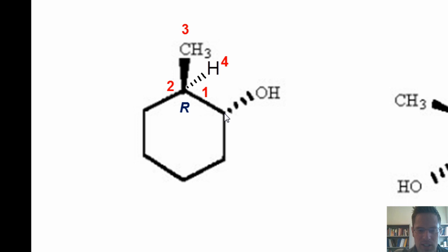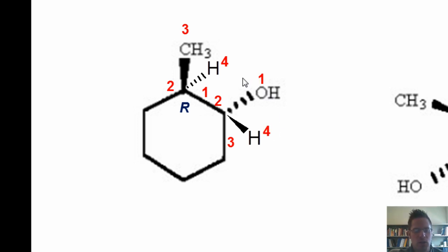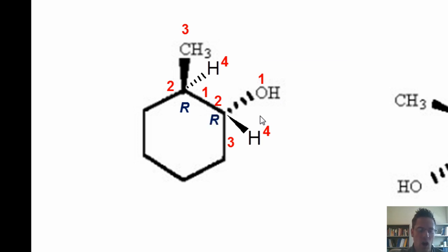Now let's assign R or S to this second stereocenter. It's bonded to an oxygen, a carbon, and a carbon. Oxygen wins. The carbon to the left is stuck to two carbons, while the carbon to the right is stuck to one, so the carbon to the left gets higher priority as number two, and the carbon to the right is number three. There is a hydrogen with a wedged bond not drawn that gets the lowest priority. Tracing from one to two to three looks counter-clockwise, but would look clockwise if I were staring from the perspective where the hydrogen points away from me. Thus this is also an R configuration.